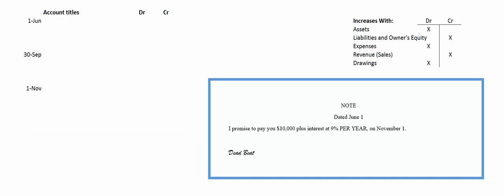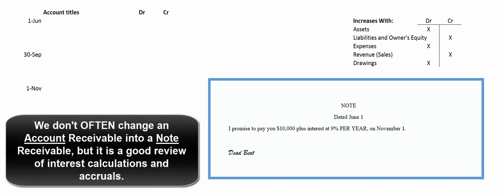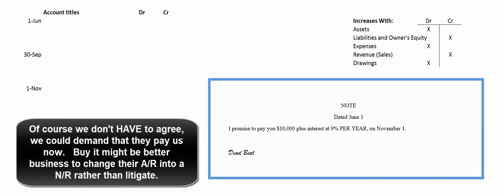Let's talk about changing an account receivable into a note receivable. It doesn't happen very often in the real world, but it's a great opportunity to talk about accrual accounting and calculating interest expense. Our customer deadbeat owes us $10,000 of an account receivable. He says he can't pay right now but should be able to by November 1st. So on June 1st we agreed to change his account receivable into a note receivable with an interest rate of 9% per year.